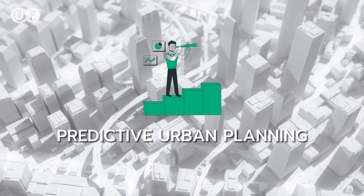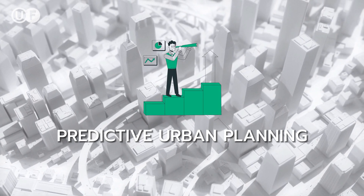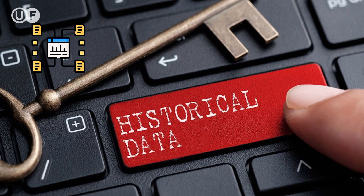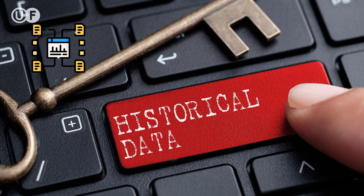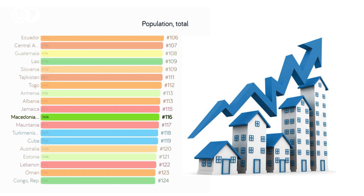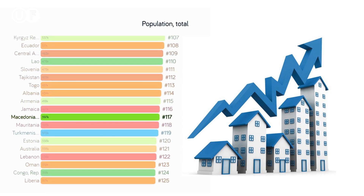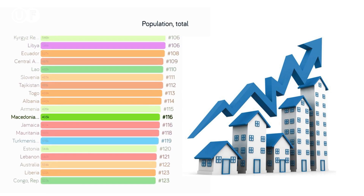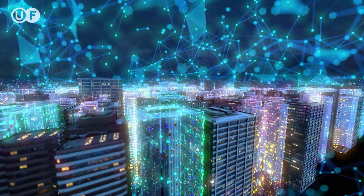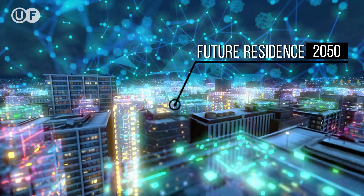One key aspect of predictive urban planning is the use of predictive analytics, which uses historical data and statistical models to make predictions about future trends and patterns. For example, by analyzing data on population growth and housing demand, city planners can predict where new housing developments should be built to accommodate future residents.